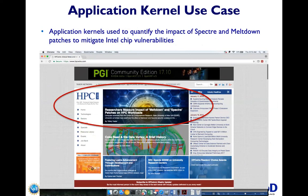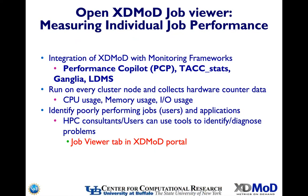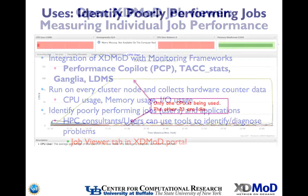Another use case for application kernels: when the Spectre and Meltdown vulnerabilities were detected and patches were applied, we were already monitoring before the patches. We monitored the same jobs after the patches and could detect the performance impact. The Open XD Mod job viewer allows you to measure individual job performance. We use PCP — Performance Co-Pilot — but other groups use TACC Stats, Ganglia, or LDMS to collect hardware counter data for metrics including CPU usage, memory usage, and IO usage.